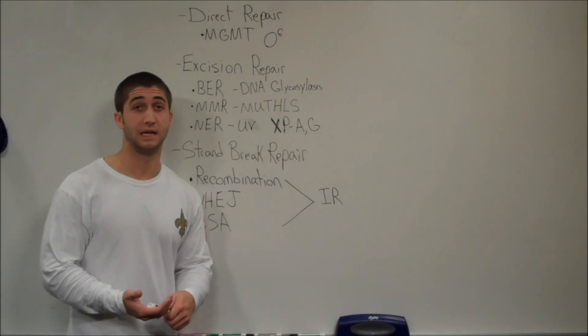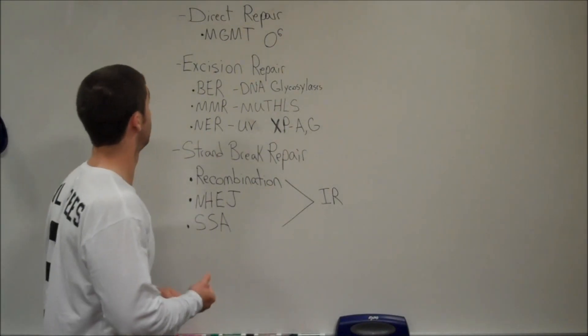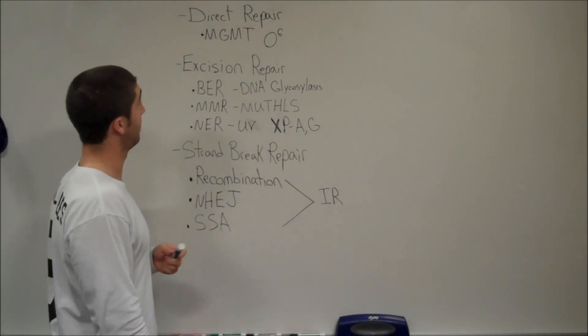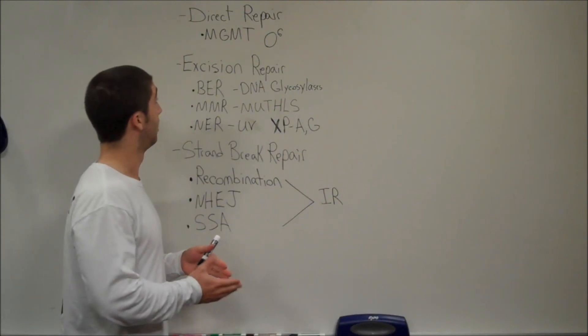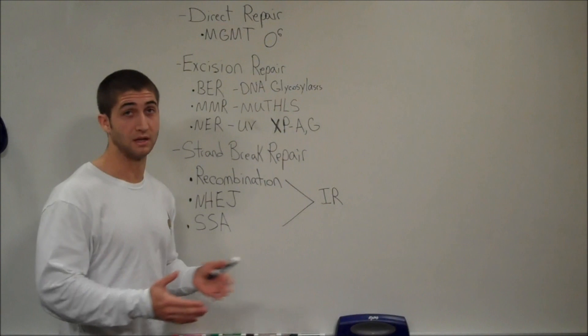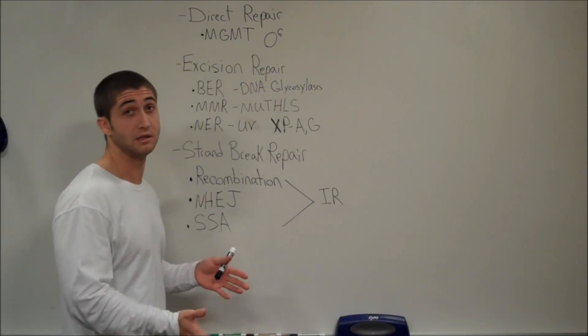All right, I'm going to talk about a couple different types of DNA damage repair systems. The first one is called direct repair, and direct repair is just going to directly repair damaged DNA due to simple things like oxidation damage and alkyl agents.